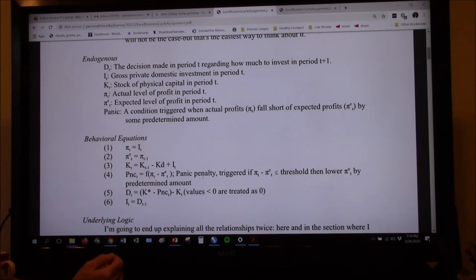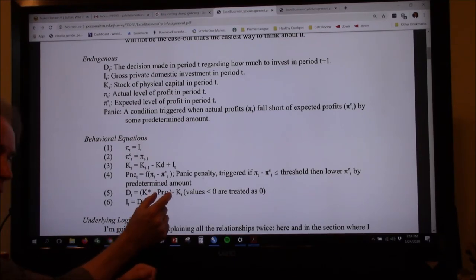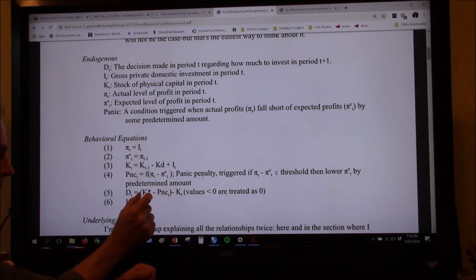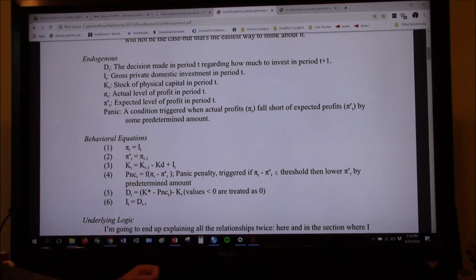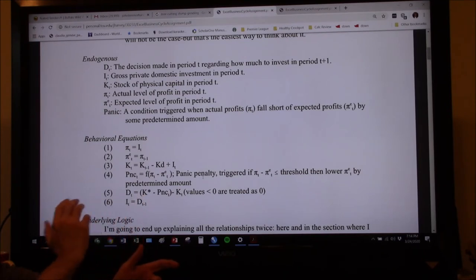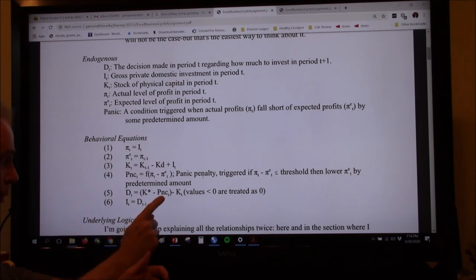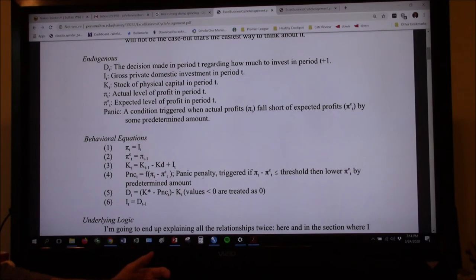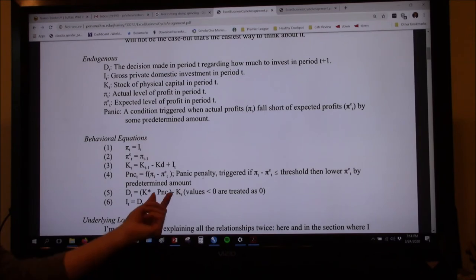And the panic is sort of a dollar value subtraction from where I want to be because I no longer want to be there. I panicked. Profits were a lot lower than I expected this time period. So even though, generally speaking, I want to get to K star, I'm adjusting that this quarter because I panicked. Something bad happened and I no longer want to.